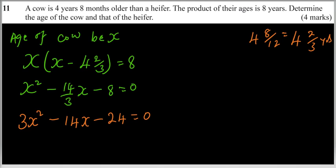The coefficient of X squared is not equal to 1, it is 3. So we get two numbers. A plus B should give us minus 14, and A multiplied by B should give us 3 multiplied by minus 24, which gives us minus 72.